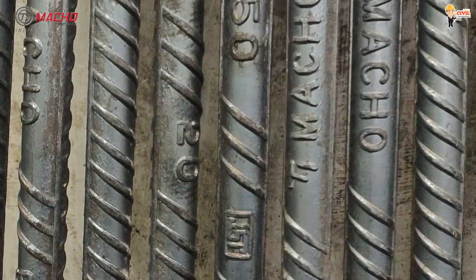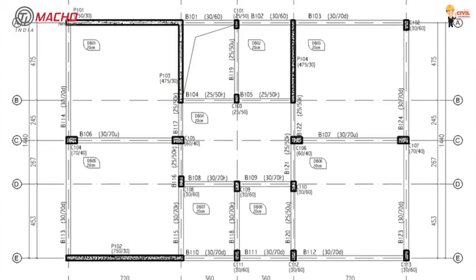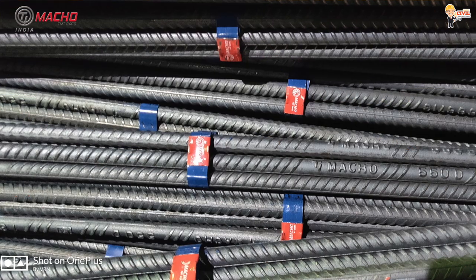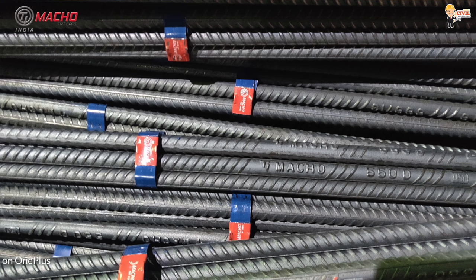A good structural engineer will recommend the right TMT bar for your project. What is a spiral bar? For years, it has been studied. The spiral bar acts like a fine brush, used in roof or rod applications.